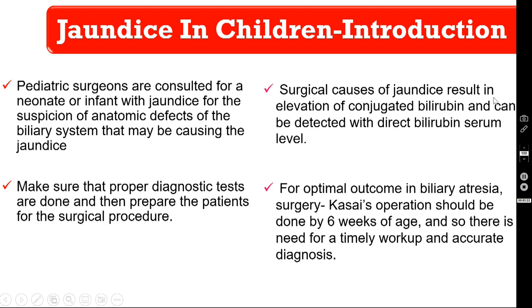The surgical causes of jaundice result in elevation of conjugated bilirubin, detected with direct bilirubin serum levels. For optimal outcome in biliary atresia, the surgery — that is the Kasai operation — should be done before six weeks of age. There is therefore a need for timely workup and accurate diagnosis.